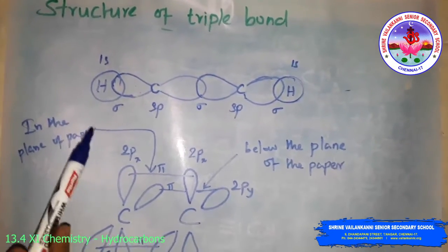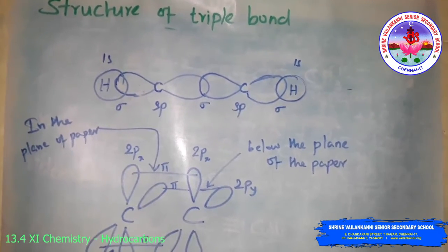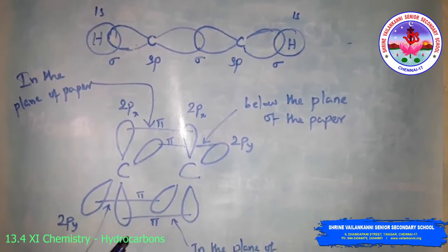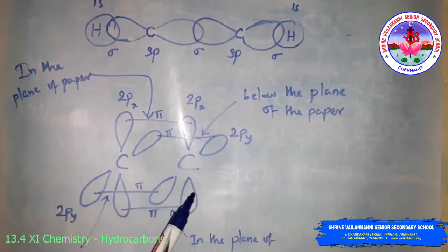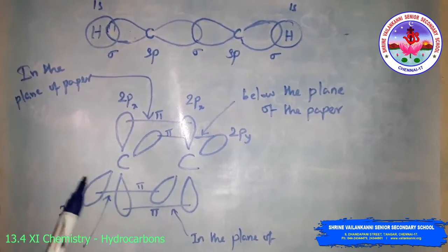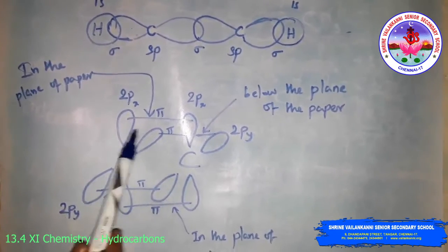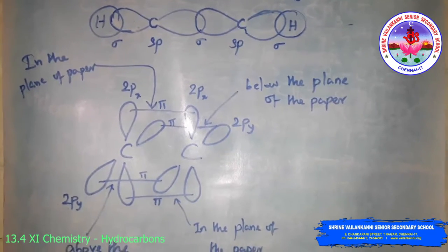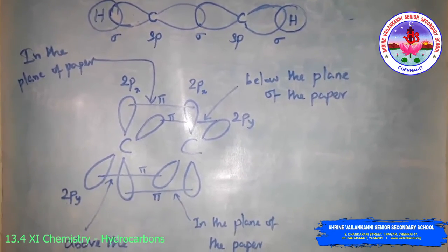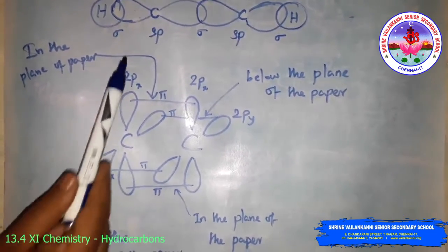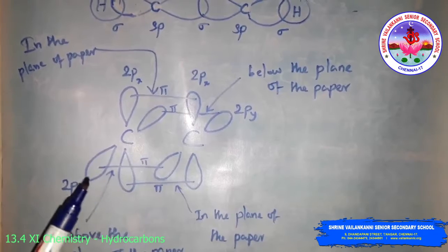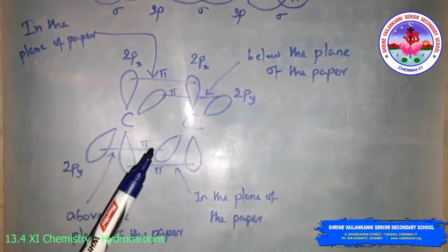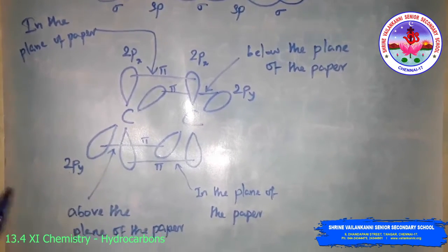The p orbitals which are perpendicular to each other, as well as to the plane of the C-C sigma bond, undergo lateral sideways overlapping to form two pi bonds between the two carbon atoms. The ethyne molecule consists of one C-C sigma bond, two C-H sigma bonds, and two C-C pi bonds.